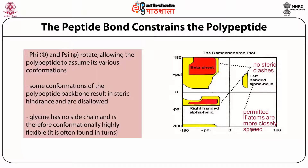The Ramachandran plot is a graphical representation of phi and psi values of a polypeptide chain. On the x-axis, phi values range from -180 to +180, and on the y-axis, psi values range from -180 to +180. The plot shows regions where beta sheets form, as well as left-hand and right-hand alpha helices, each corresponding to their respective phi/psi combinations.